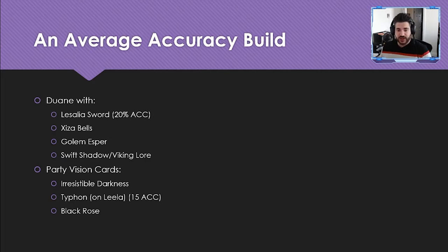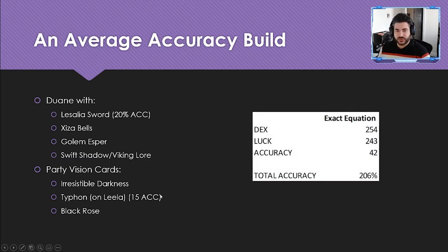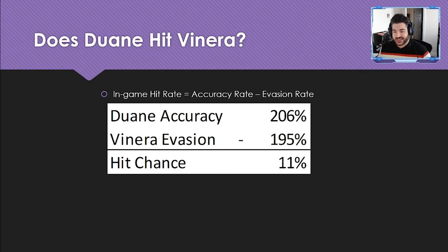Now let's look at an average accuracy build. Duane is a popular unit but not highly accurate. We'll build him with the Lazalia sword, Isabella's Golem esper, Irresistible Darkness as his vision card, Typhon on Lila in the party, and Black Rose Fragility. The two key external accuracy sources are 20% from the Lazalia sword and 15% from Typhon. Adding dexterity, luck, and those external sources gives Duane a total accuracy of 206.